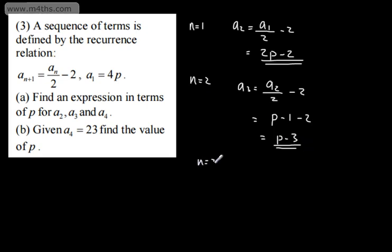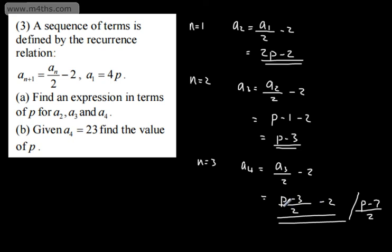Substituting in n is equal to 3, we will have a4, that will be equal to a3 and that will be divided by 2 minus the 2. So substituting in our expression for a3, that will be p minus 3 over 2 and then we're going to have minus 2. I'm going to leave it in that particular form, we could simplify that if we wanted, it's entirely up to us. If you wanted to write it, you could write this now as p minus 7 over 2. So all I'm doing here is combining the fractions.